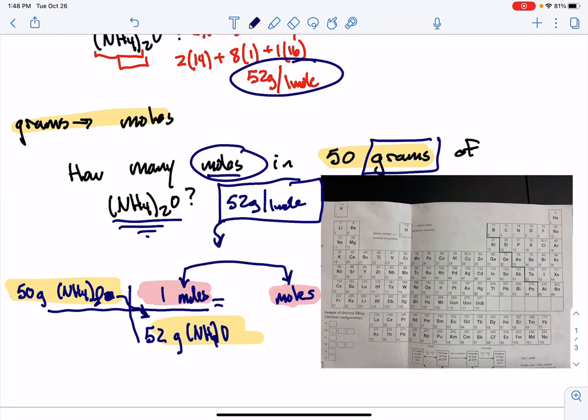So this problem ends up being 50 divided by 52, which I typed in and I got 0.961 would be my answer.